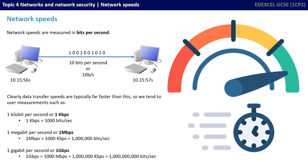Data transfer speeds are typically far faster than this, so we tend to use measurements such as 1 kilobit per second — that's 1,000 bits — 1 megabit per second, which is a million bits per second, and 1 gigabit per second, which is a billion bits per second.